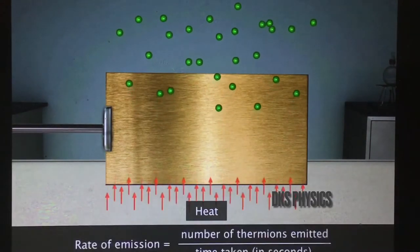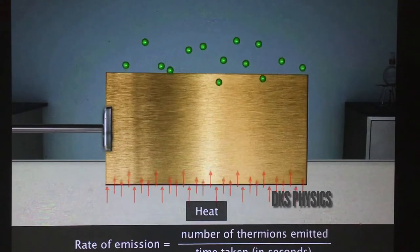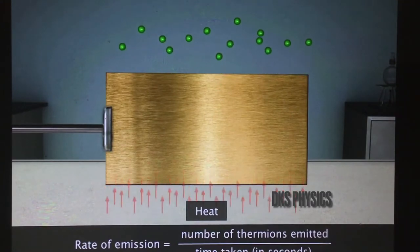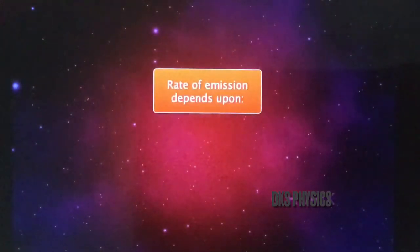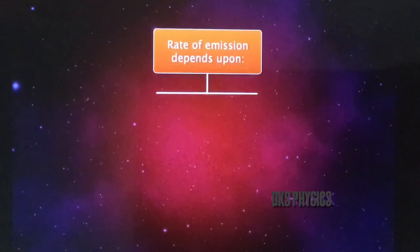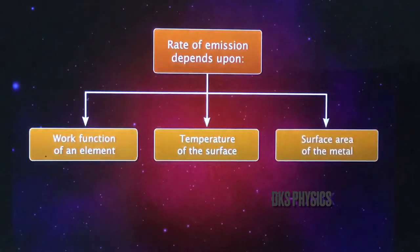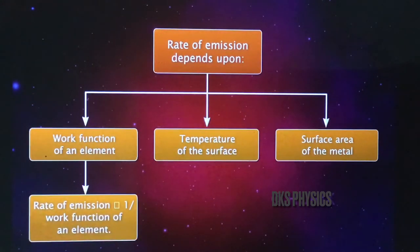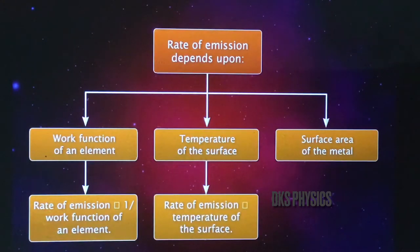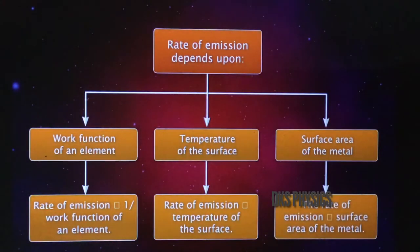The rate at which thermions are emitted per second from a metal is called its rate of emission. Experimentally, it has been found that the rate of emission depends upon three factors: the work function of the element, the temperature of the surface, and the surface area of the metal. The rate of emission is inversely proportional to the work function, directly proportional to temperature, and directly proportional to surface area.